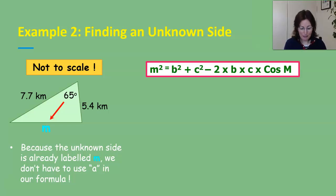Now in this triangle it's been labeled m and what we've got written here is because the unknown side is already labeled m we don't have to use a in our formula so don't feel like you have to stick to that. Side m little letter m, let's call the angle across from it capital M. Let's label the other two sides b and c doesn't matter which way around you label them and now we substitute them into the formula.